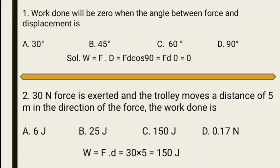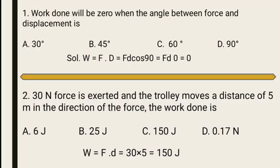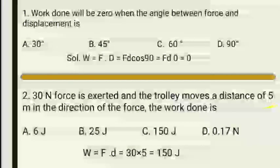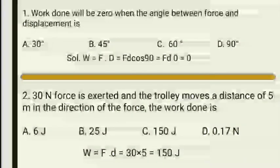The second MCQ states: a 30 newton force is exerted and the trolley moves a distance of 5 meters in the direction of force. What is the work done? By definition, W equals F dot d. The force value is 30 newtons and the distance value is 5 meters. Multiplying: 30 times 5 equals 150.